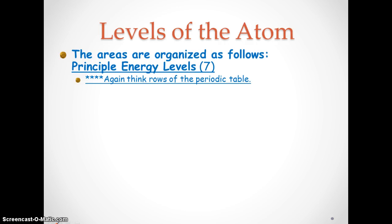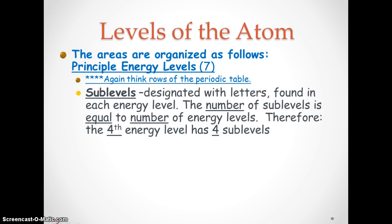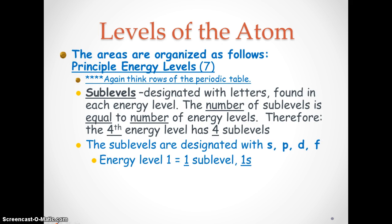Again, there are seven levels or seven principal energy levels, so think rows of the periodic table. Now what we learn about is the sublevels, designated with letters found in each energy level. The number of sublevels is equal to the number of energy levels. So if we're on our fourth energy level, we have four sublevels.